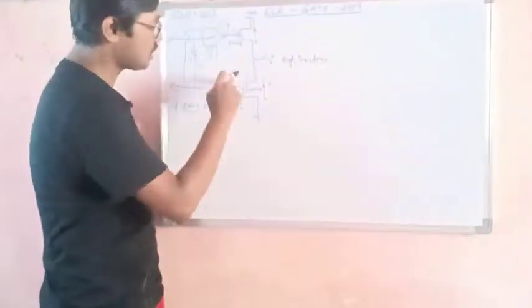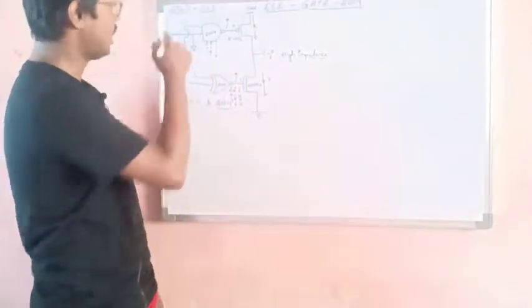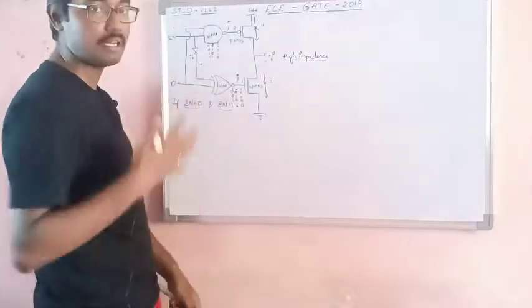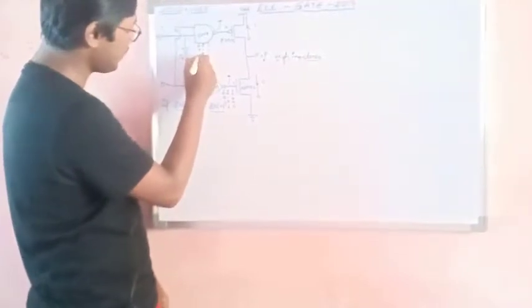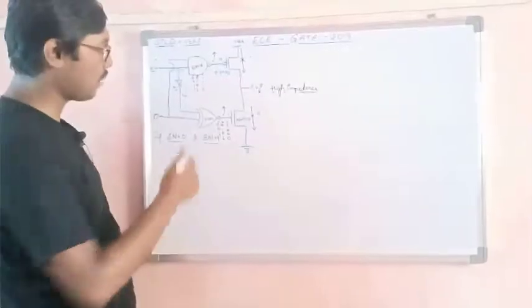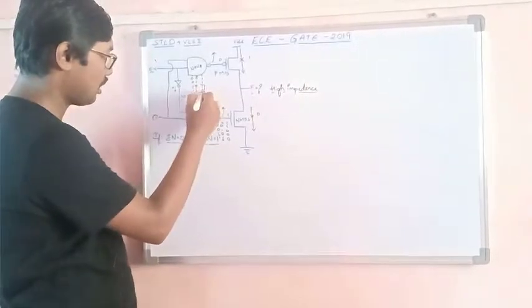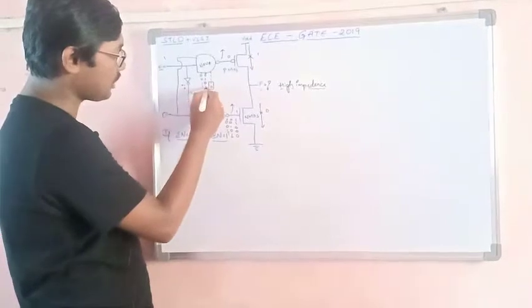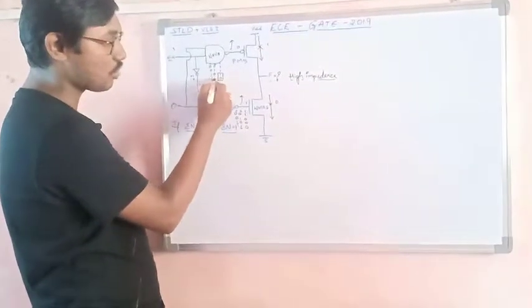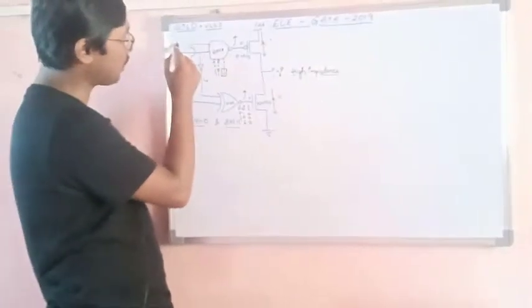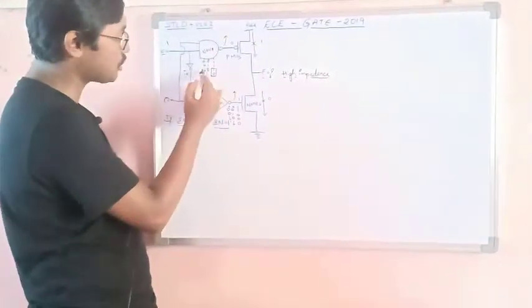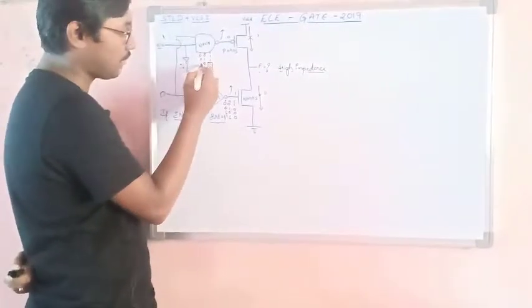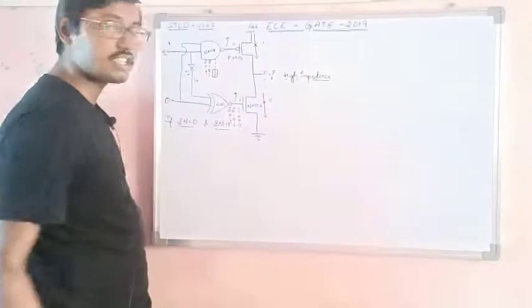Now if I change EN to 1, let us see what happens. When EN equals 1, one input to the NAND gate is 1. If the other input B is 0, the output toggles — it gets toggled. One value is always 1, so placing A as 1 and B as 0 gives output 1; A as 1 and B as 1 gives output 0. The NAND output flips — whatever the value of D, I am getting D-bar here.